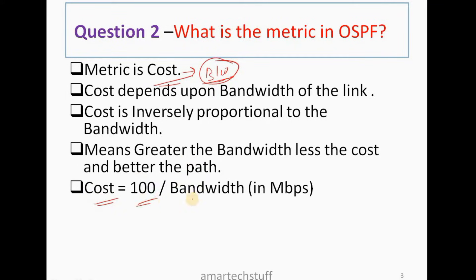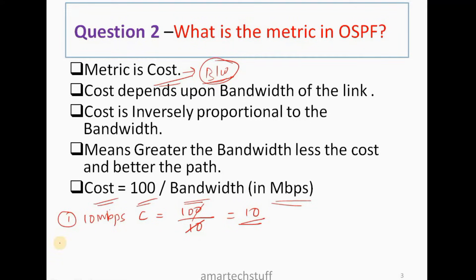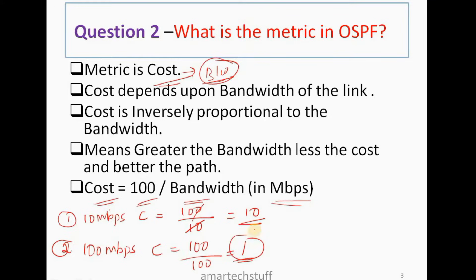The formula for OSPF cost is: Cost = 100 divided by bandwidth in Mbps. For example, a 10 Mbps link gives a cost of 100/10 = 10. A 100 Mbps link gives a cost of 100/100 = 1. Since 1 is less than 10, the 100 Mbps link has a better (lower) cost. This is how cost is calculated in OSPF.